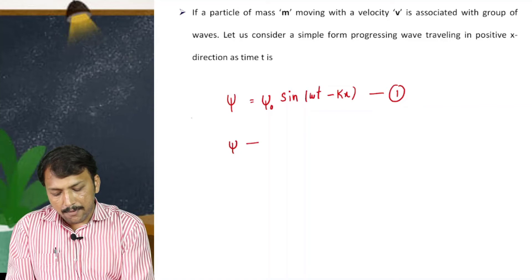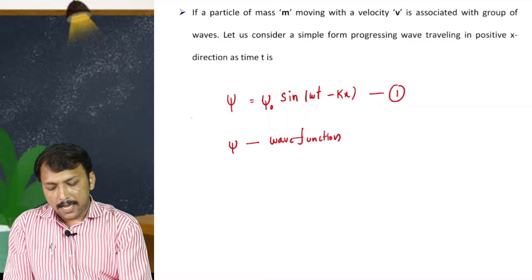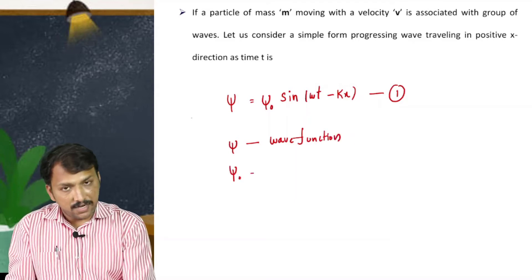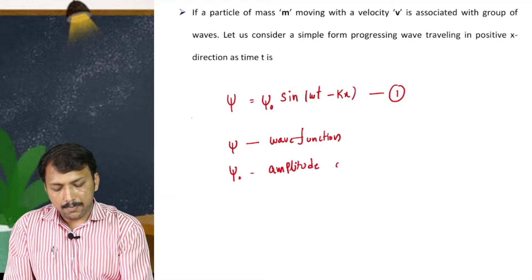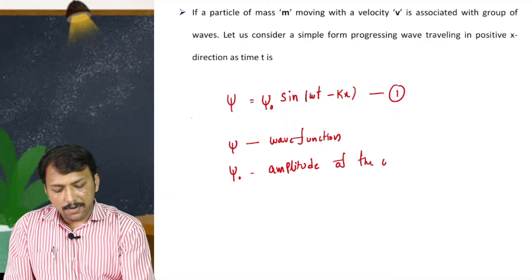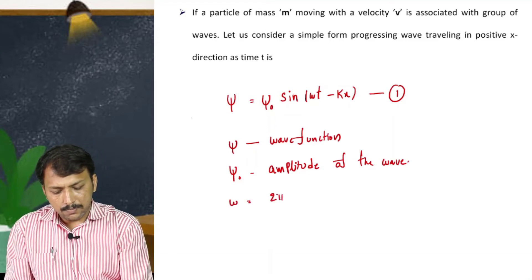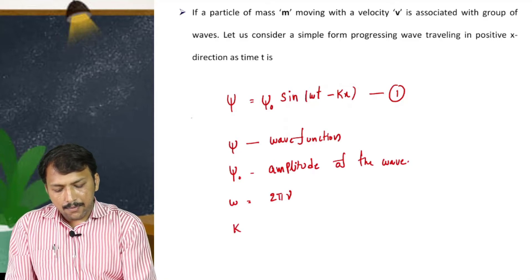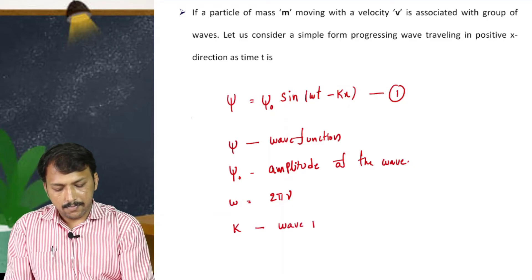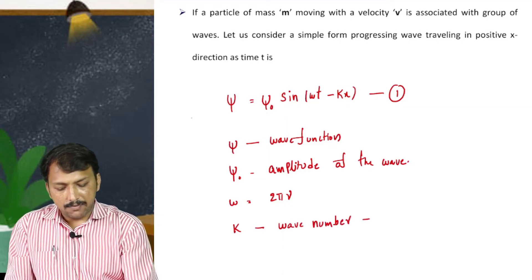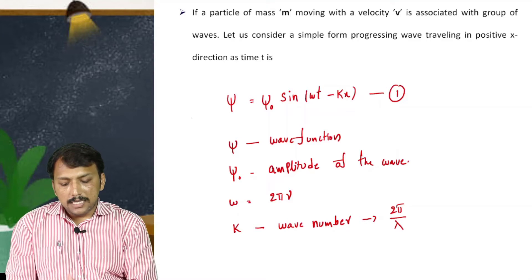Here, psi is the wave function, psi-naught is the amplitude of the wave, omega is the angular frequency — that is 2·pi·nu — and k is the wave number, whose value is equal to 2·pi divided by lambda.